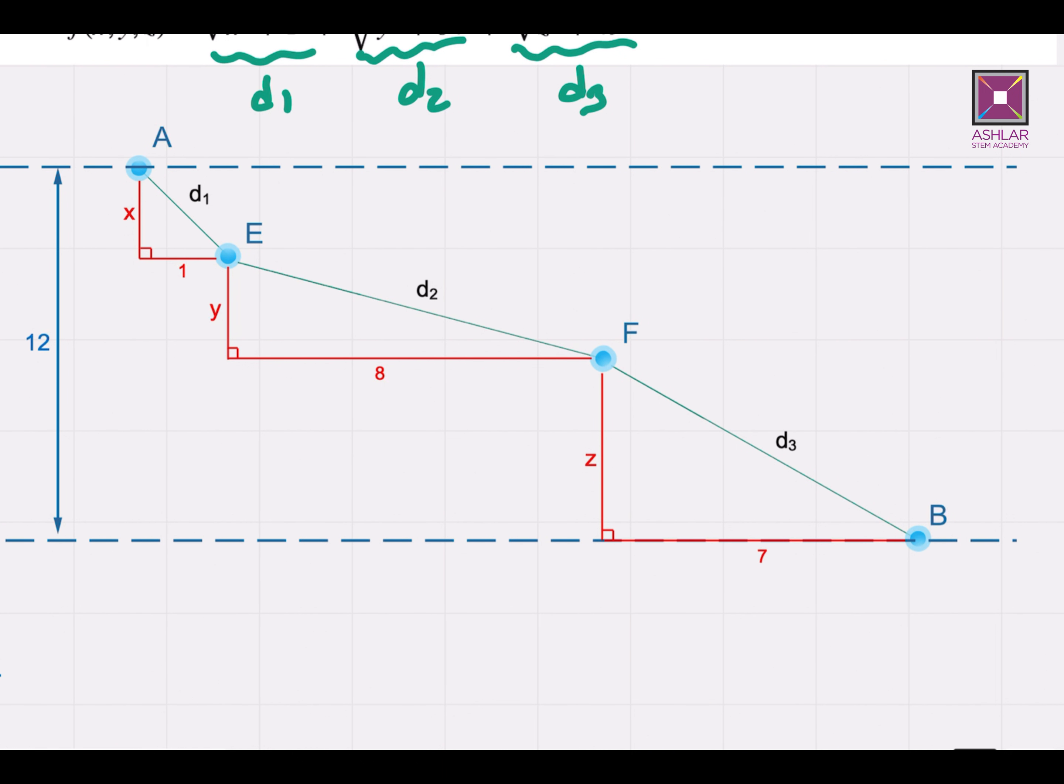So as you see, D1, D2, and D3 turns out to be the total distance that I travel from A to B, as I move along the line segments A-E, E-F, and F-B.